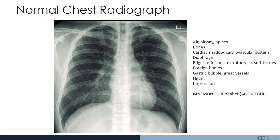Look for foreign bodies, whether there's an implantable loop recorder, whether there's any patient artifacts, any piercings, whether there's a pacemaker. Inspect the gastric bubble, the great vessels, ensure that there's no pneumoperitoneum. Examine the hila, ensuring that there's no evidence of sarcoidosis or bilateral hilar lymphadenopathy. And this will allow you to create an overall impression.